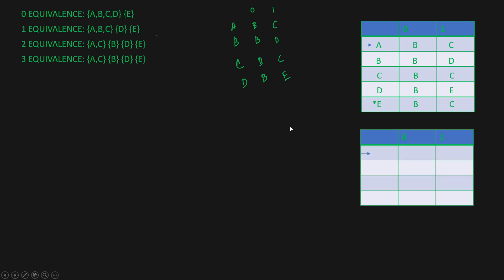Now we'll create a new minimized transition table with the combined states. A and C are combined into a new state called AC. In state AC, on input 0 you go to state B, and on input 1 you go to state AC (since C is now AC). For state B: input 0 goes to B, input 1 goes to D. There is no separate state C anymore. For state D: input 0 goes to B, input 1 goes to E. For state E: input 0 goes to B, input 1 goes to AC.